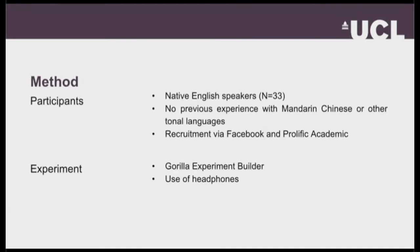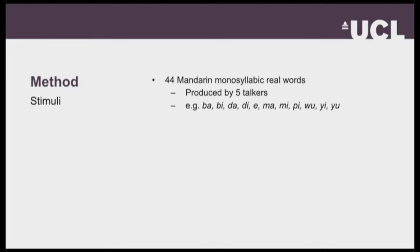Moving on to the method. In terms of participants, I recruited 33 native English speakers with no previous experience of Mandarin Chinese or any other tonal languages. I did this through Facebook and also Prolific, and the experiment was run online through Gorilla Experiment Builder. Participants were asked to wear headphones. I chose 44 Mandarin monosyllabic real words, based on 11 syllables each produced with the four Mandarin tones, recorded by five different native Mandarin speakers.